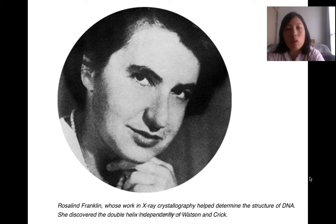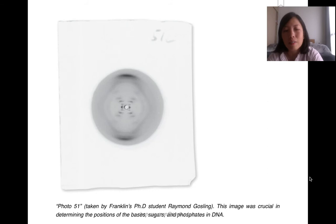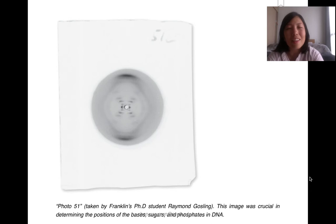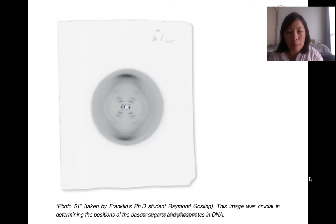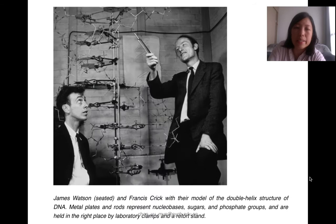Together with her PhD student, Rosalind Franklin used X-ray crystallography to take a very famous photo known as Photo 51. When you look at it, you can see an X shape, which is actually the top view of a DNA molecule — the individual lines within the X show the positions of the bases stacked on top of each other. Because of this X shape, it became evident that the DNA molecule is a double helix made up of two polynucleotide strands. Back then it was really a race to discover the structure of DNA.